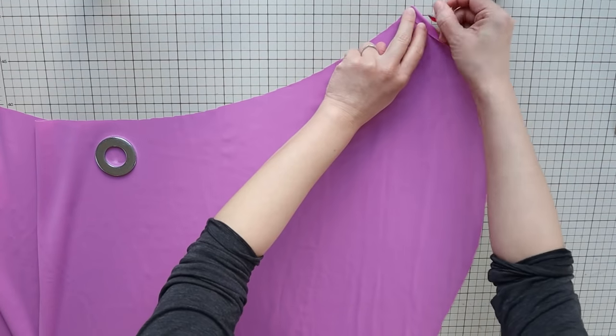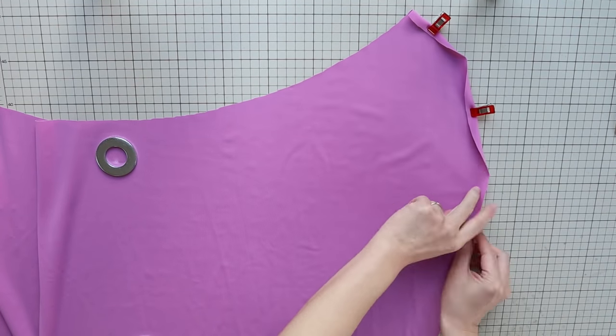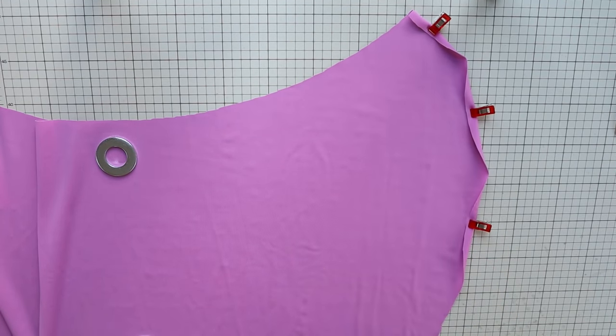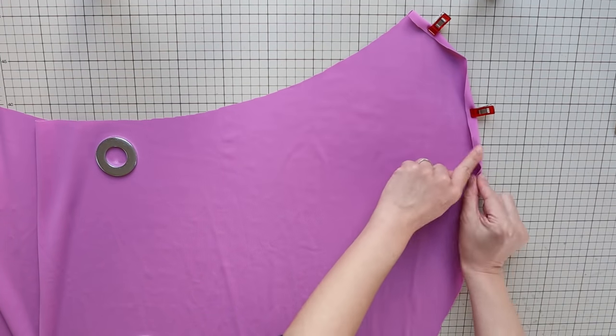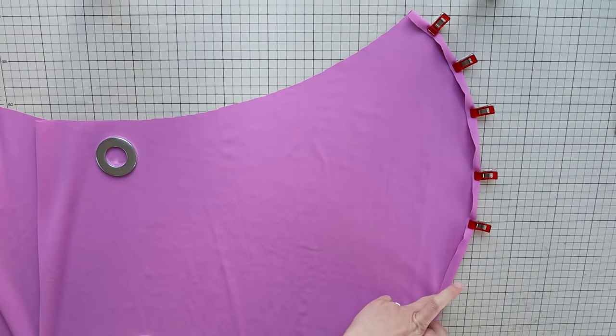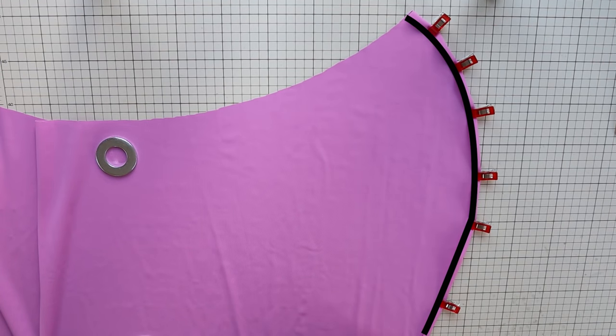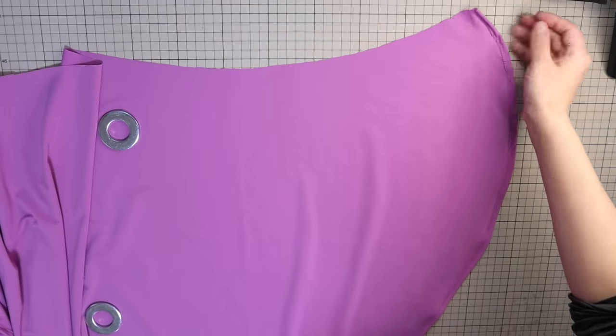First, let's treat the round edge of the hip scarf panel. For stretch fabric, you can simply fold 1 centimeter or 3 eighths of an inch from the edge towards the wrong side and do a zigzag stitch. If you're using woven fabric, you can do a rolled hem or use a serger.